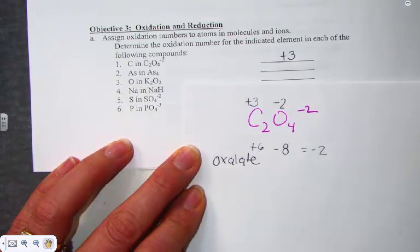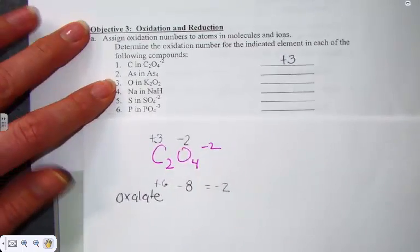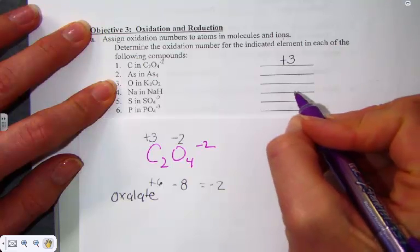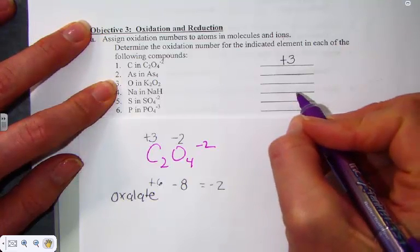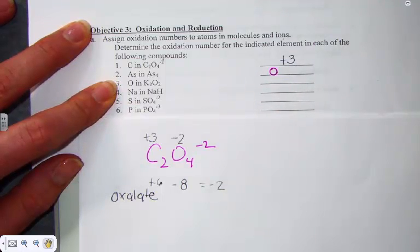Number 2, As in As4, the arsenic. This happens to be the way this atom is found in its natural state, As4. Rule number 1 from our oxidation rules would show any element in its natural state is assigned a 0.